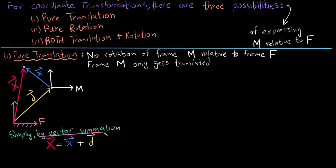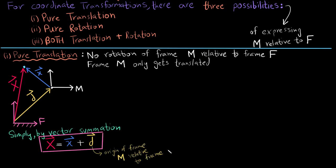Here the d vector is the coordinates of the origin of the moving frame with respect to the fixed frame. Small x is the point defined in the moving frame, and big X is the same point defined with respect to the fixed frame.